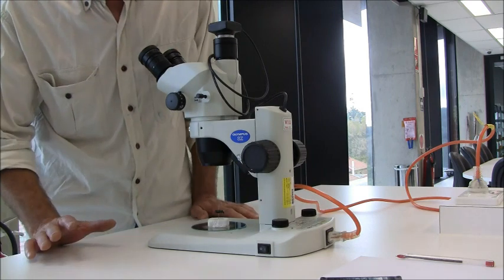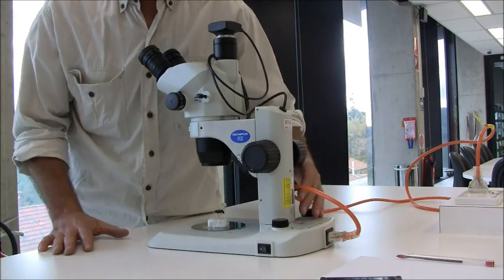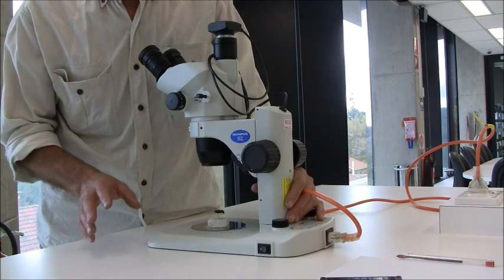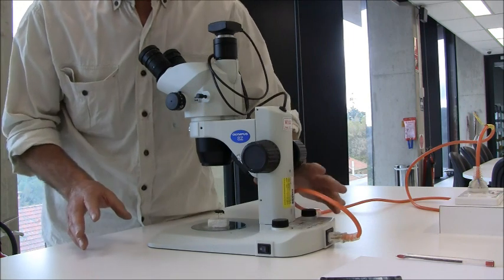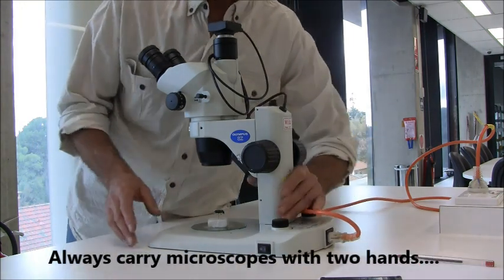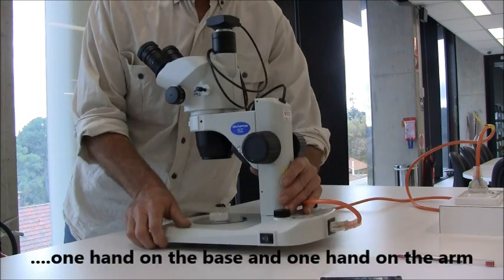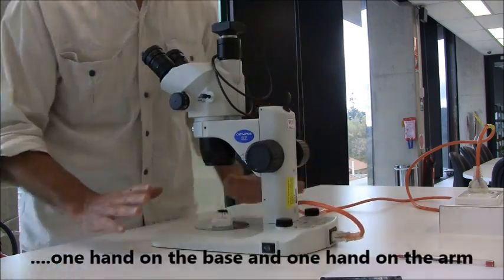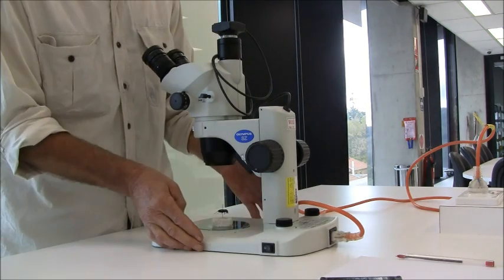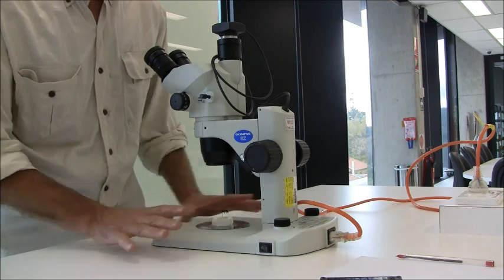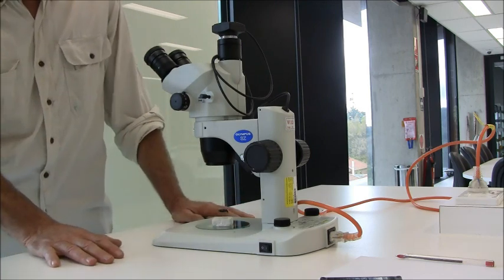Now, setting this microscope up, I'll first mention how to carry them. They're quite expensive, and if you drop them they certainly won't come out well. Grab it by the post and by the base with a nice firm grip. Once it's on the bench, set it up where it's convenient and then leave it there. Pushing it around the bench is not good either.